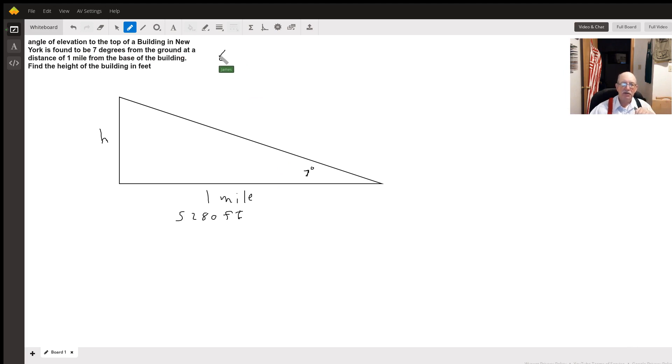So we're going to have the tangent of seven degrees equals H over 5,280. Now if you're doing this on your calculator, make sure you are in degrees.